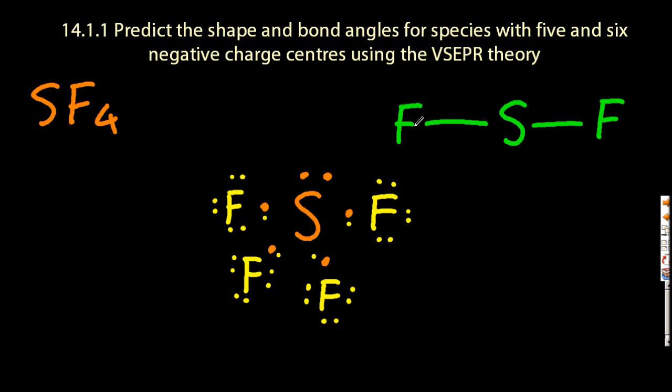Lone pairs, according to VSEPR theory, are extra repulsive. And so when I draw it out, it gives it a kind of seesaw shape.